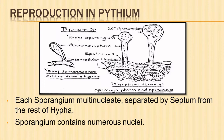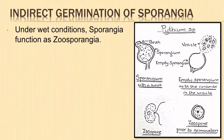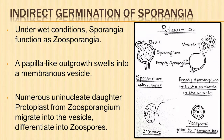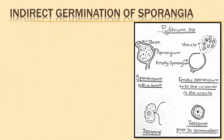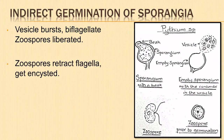Under wet conditions, the sporangia remain attached to the hyphae and function as zoosporangia. A papilla or beak-like outgrowth called an exit tube is formed in the mature zoosporangium, which swells up into a thin-walled balloon-like membranous vesicle. The numerous uninucleate daughter protoplasts from the zoosporangium migrate through the exit tube into the vesicle and get differentiated into zoospores. The vesicle bursts when the zoospores are mature.